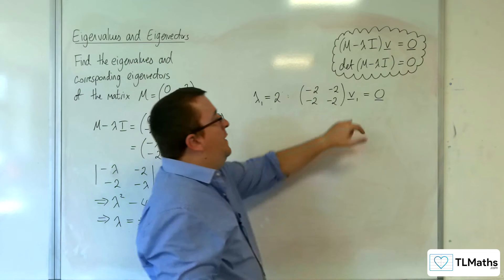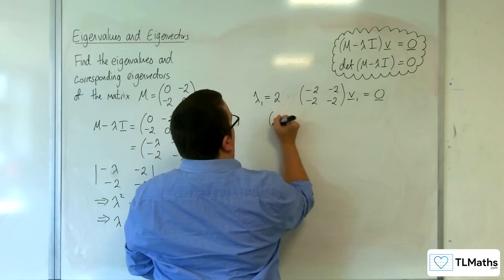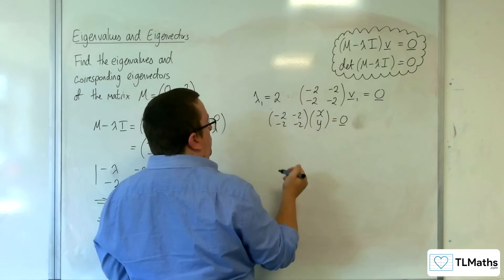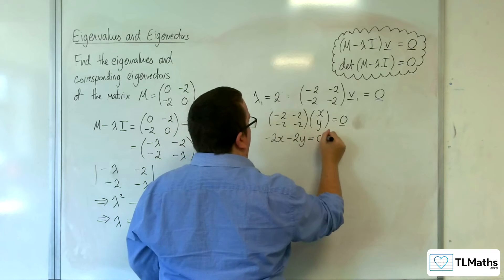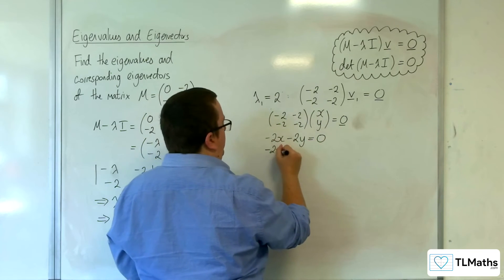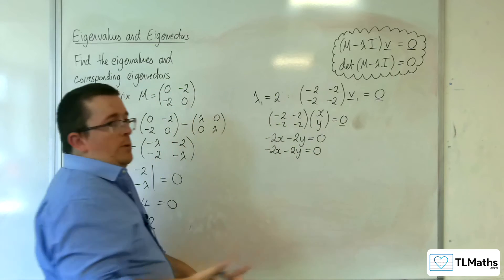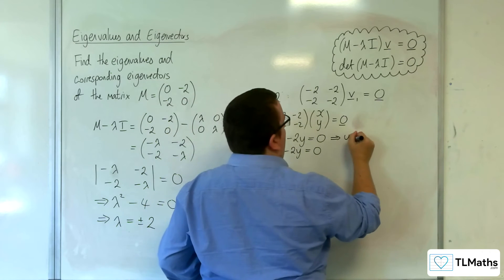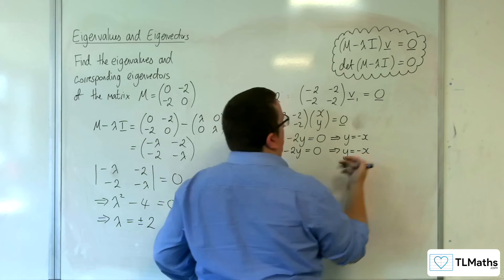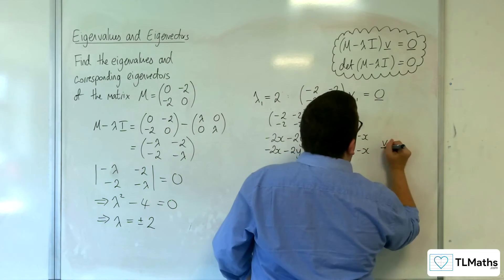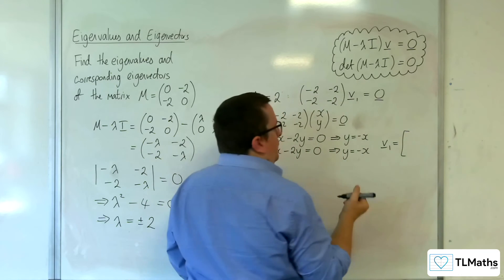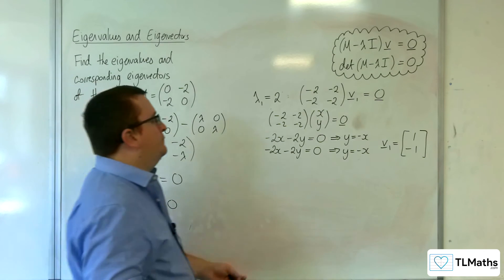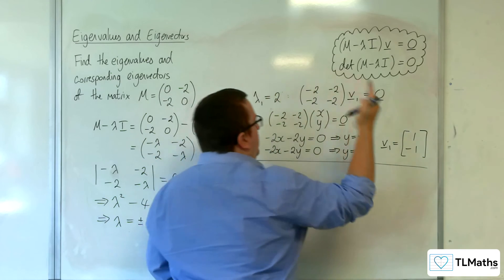That eigenvector can be represented as (x, y). So (−2, −2, −2, −2) times (x, y) equals the zero vector. The first row gives −2x − 2y = 0, and the second row gives exactly the same thing. Rearranging, adding 2y to both sides and dividing by 2, we get y = −x. So the corresponding eigenvector v1, writing x = 1, gives v1 = (1, −1).